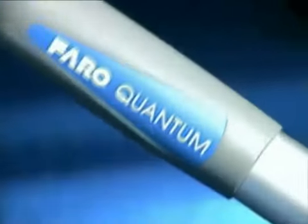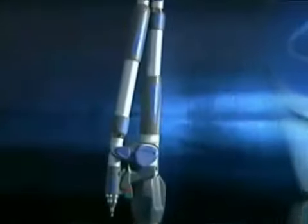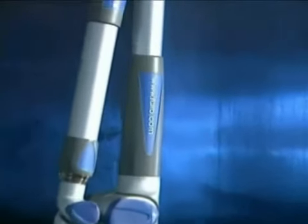The Farrow Arm is a portable coordinate measuring machine that enables users to conveniently take highly precise 3D measurements of both large and small parts in all phases of production.